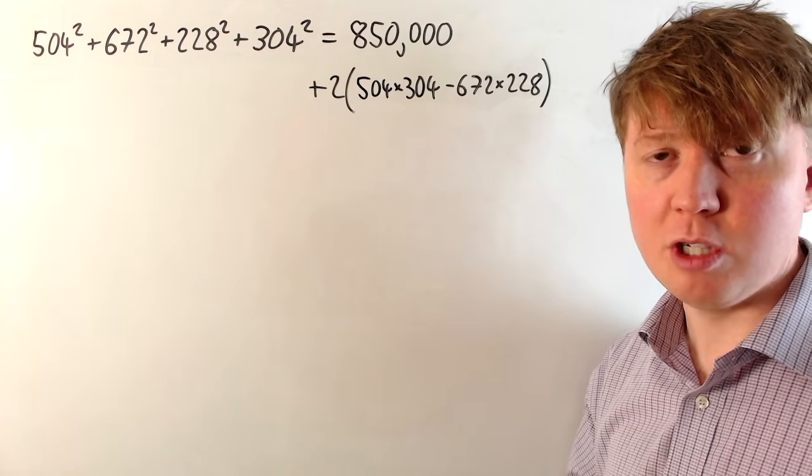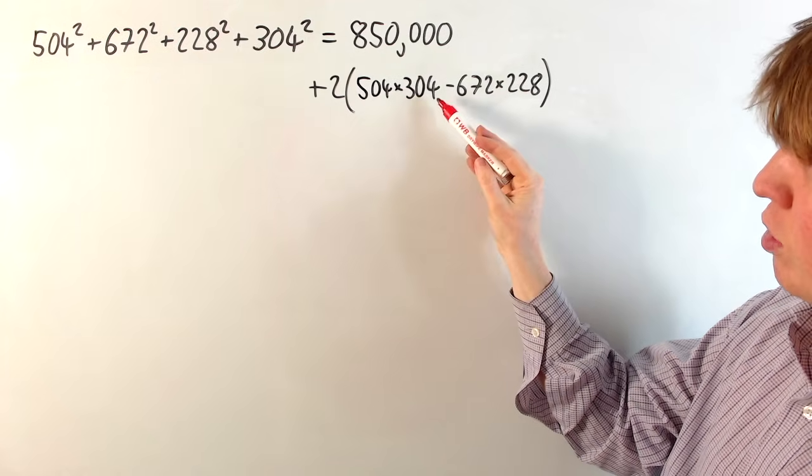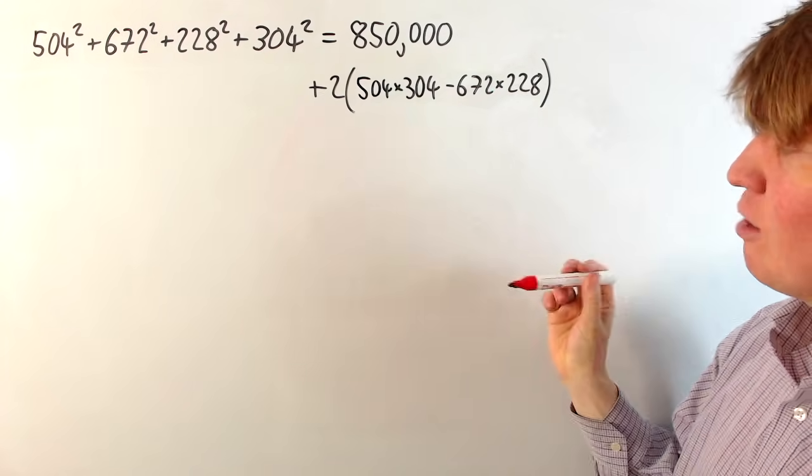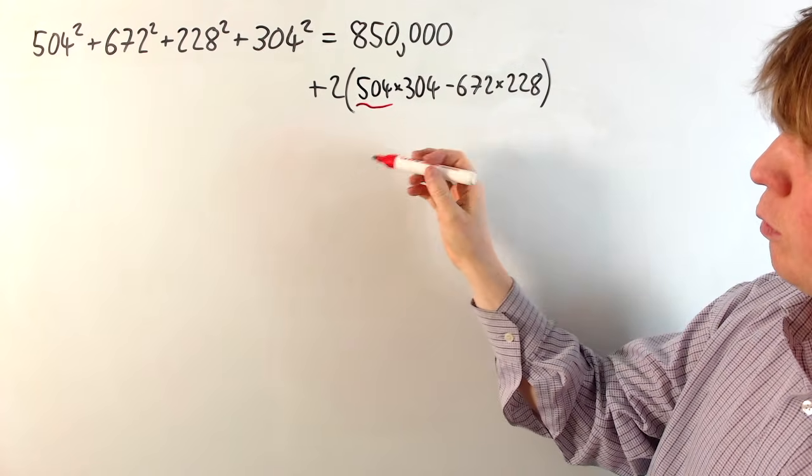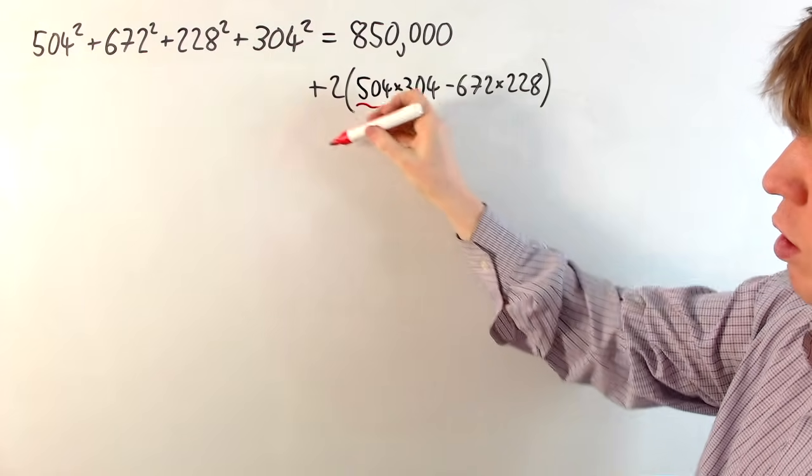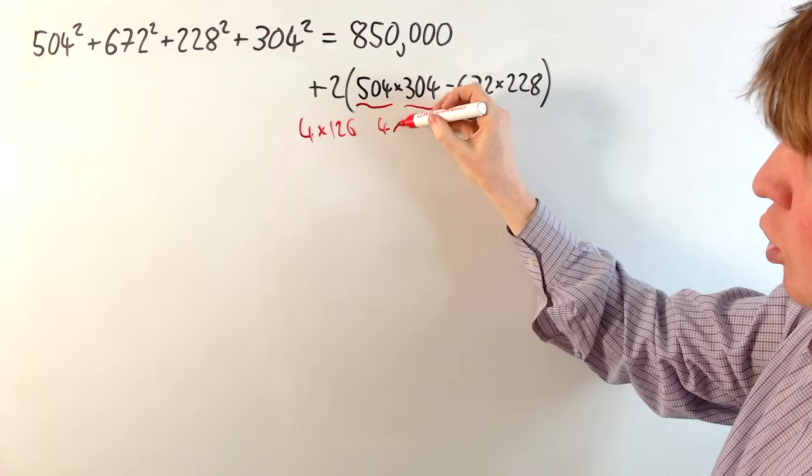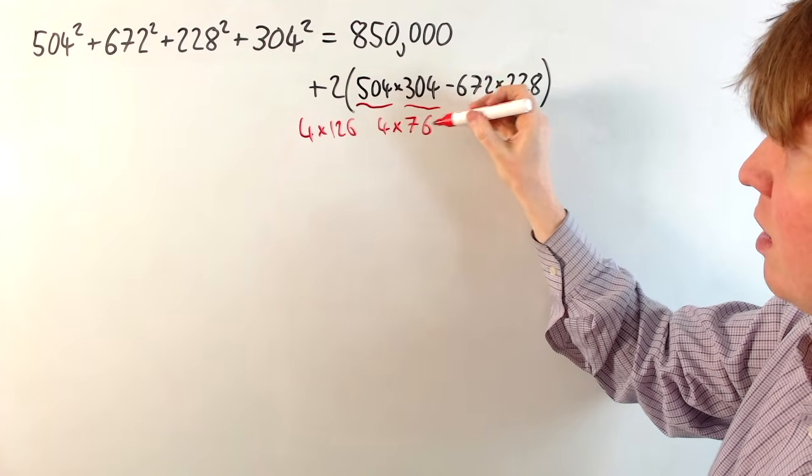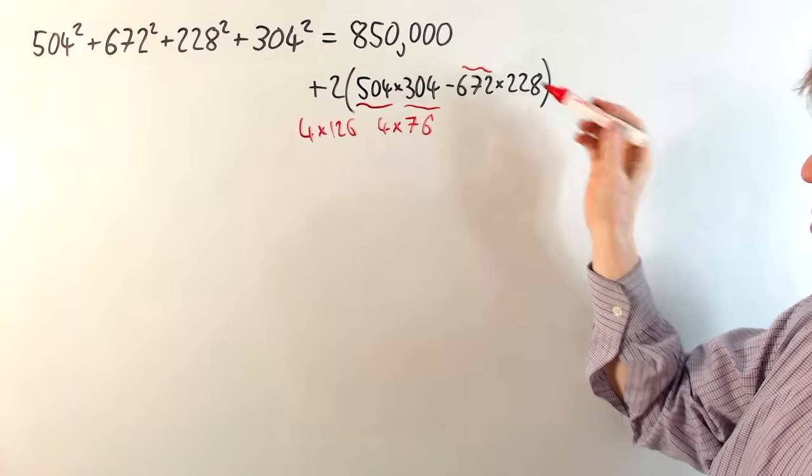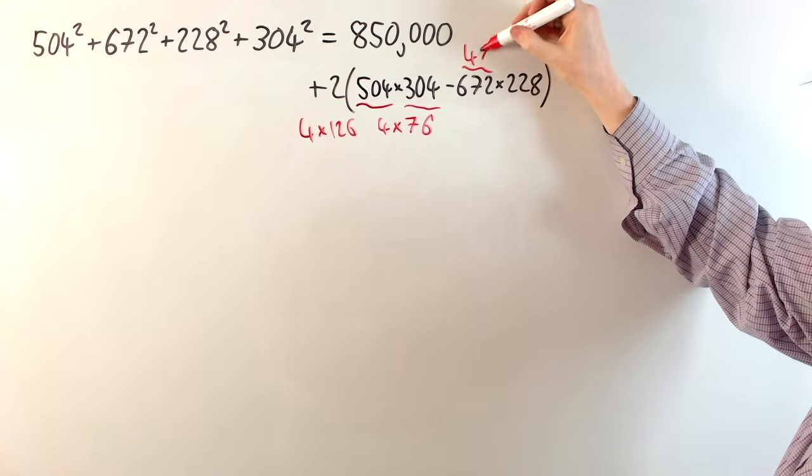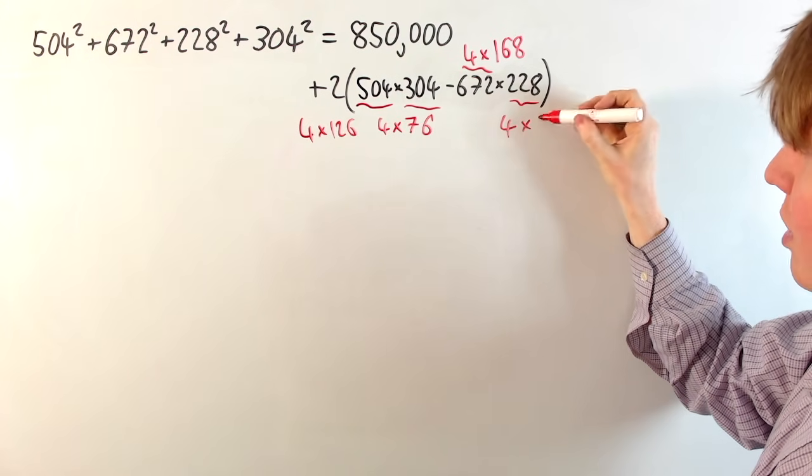You can see that just by checking the last two digits. We know that 100 is a multiple of 4. So we only really need to worry about the 04, 04, 72 and 28 are also multiples of 4. So you can write 504 then. This is going to be 4 times 126. And then 304 is going to be 4 times 76. And then 672, we've got 150 plus 18. So this is 4 times 168. And finally 228 is 4 times 57.